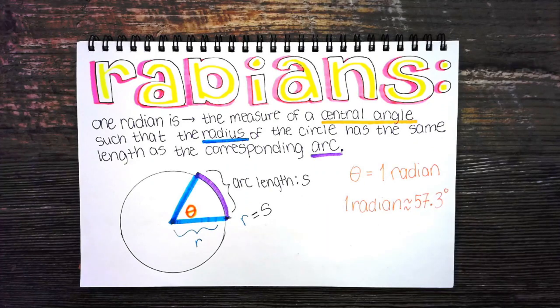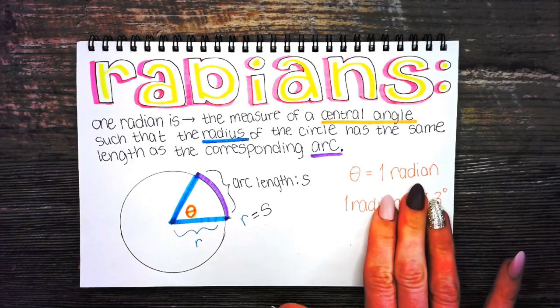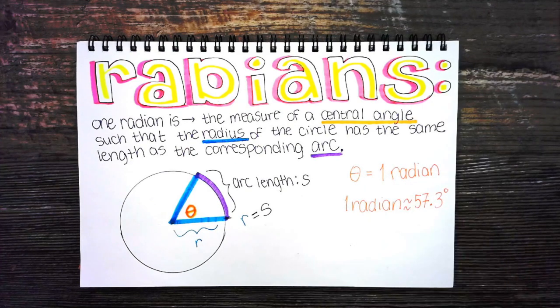Radians are the only thing in math that actually don't have a unit. We really don't label radians with anything. But right now I'm using the word radian because we're just learning about it.